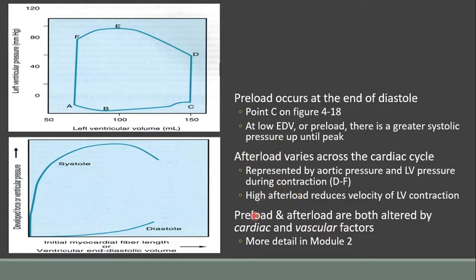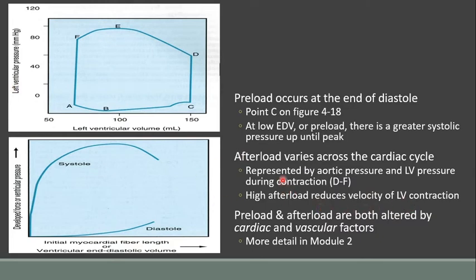Preload and afterload are going to impact this pressure-volume relationship and are going to impact stroke volume and cardiac output. We'll talk more in the future about how preload and afterload are altered by cardiac output and other vascular factors. But for now, just remember that preload is going to impact stroke volume by impacting sarcomere length and therefore the pressure that can be developed, and a higher afterload is going to reduce stroke volume.